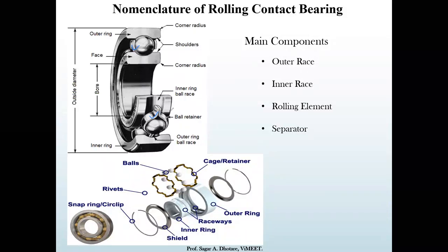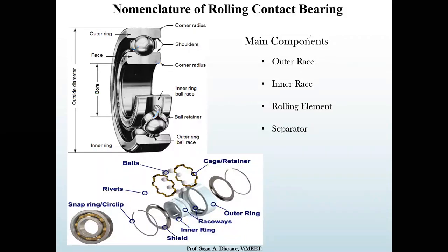The retainer keeps the ball in its position. A corner radius is provided on the inner and outer side to avoid the notch effect. The inner bore diameter is where the shaft mounts. The outer diameter is where the bearing fits into the housing. The main components of any rolling contact bearing are: outer race, inner race, rolling element, and separator (retainer).